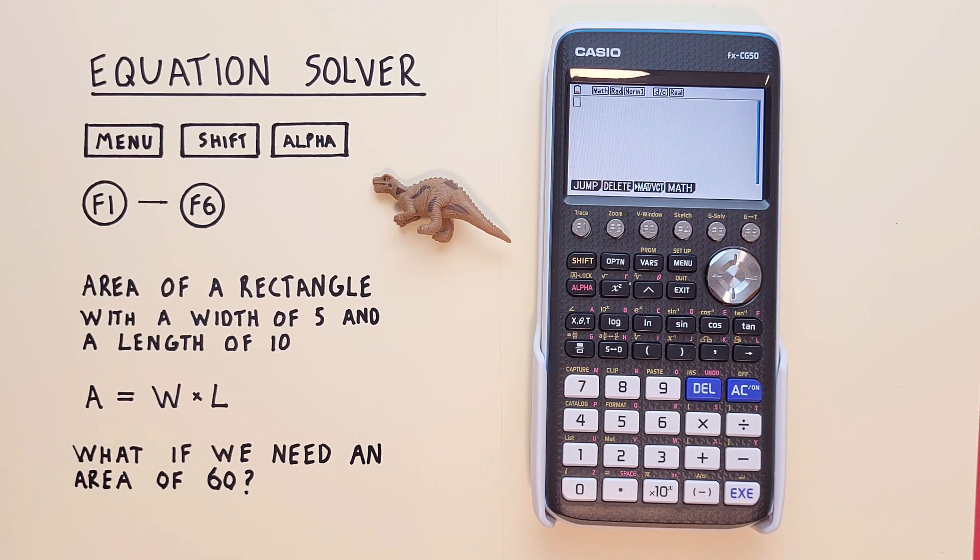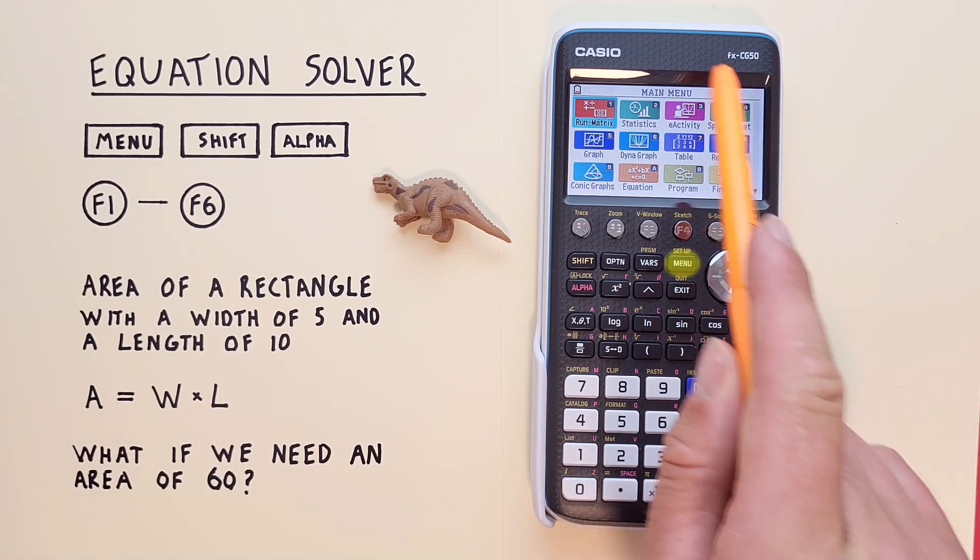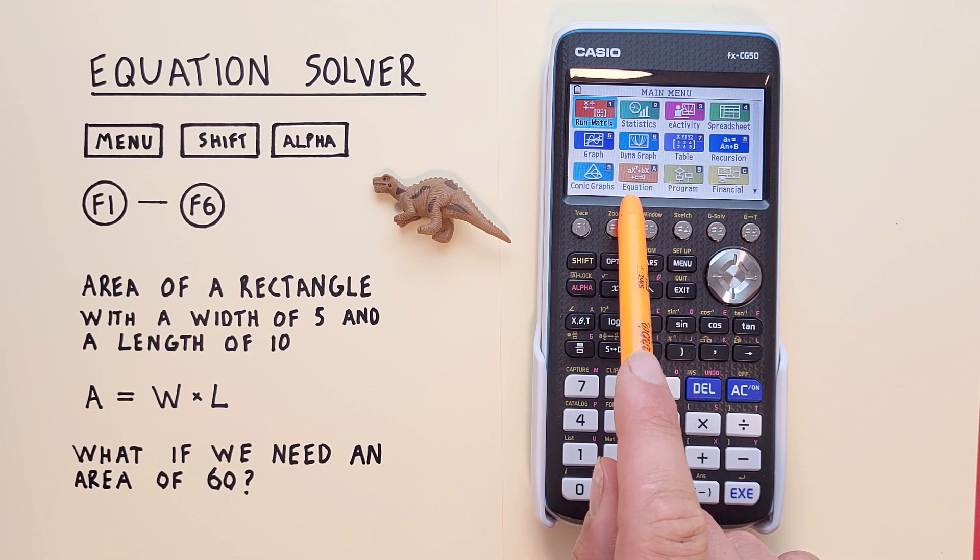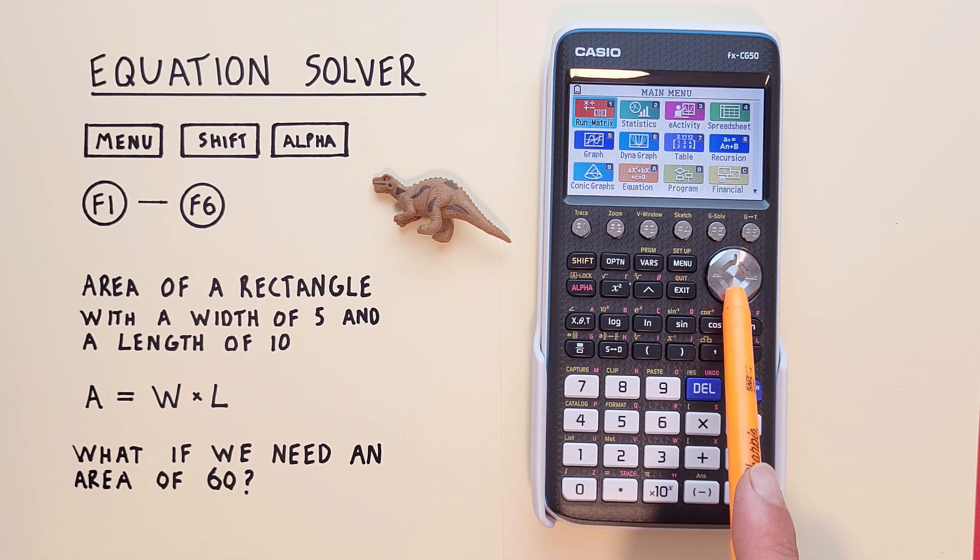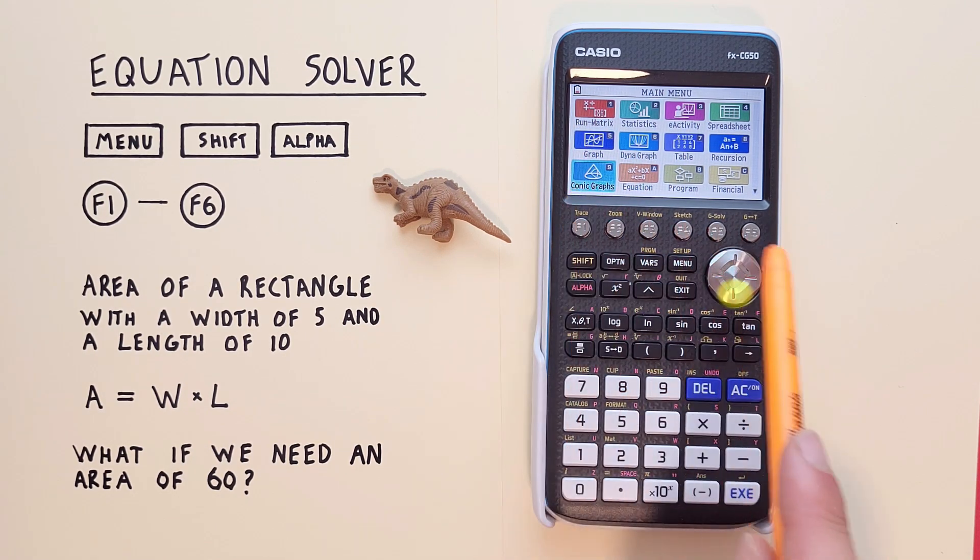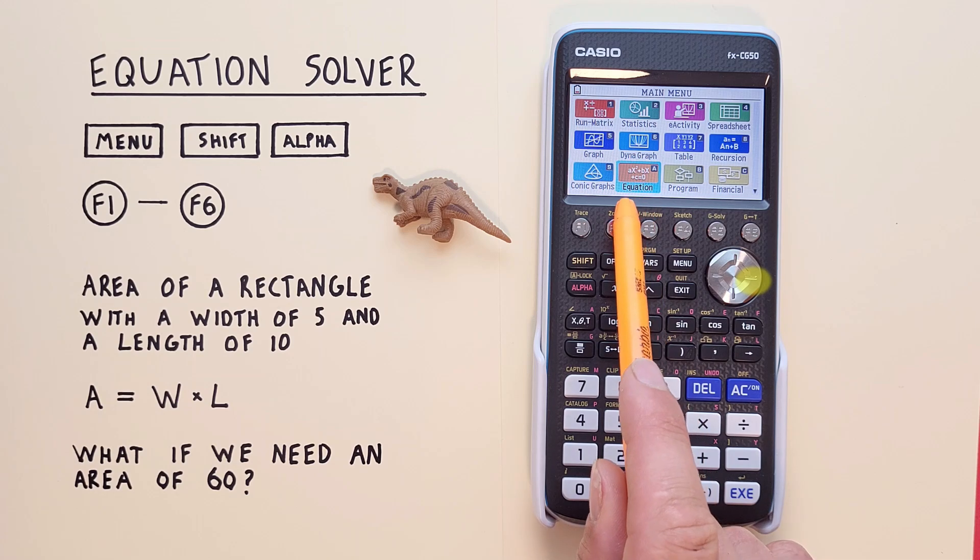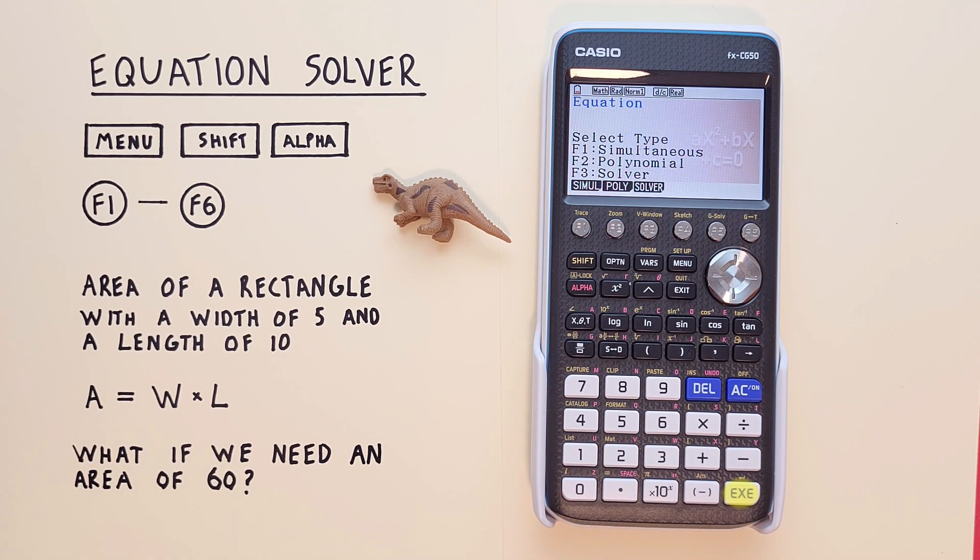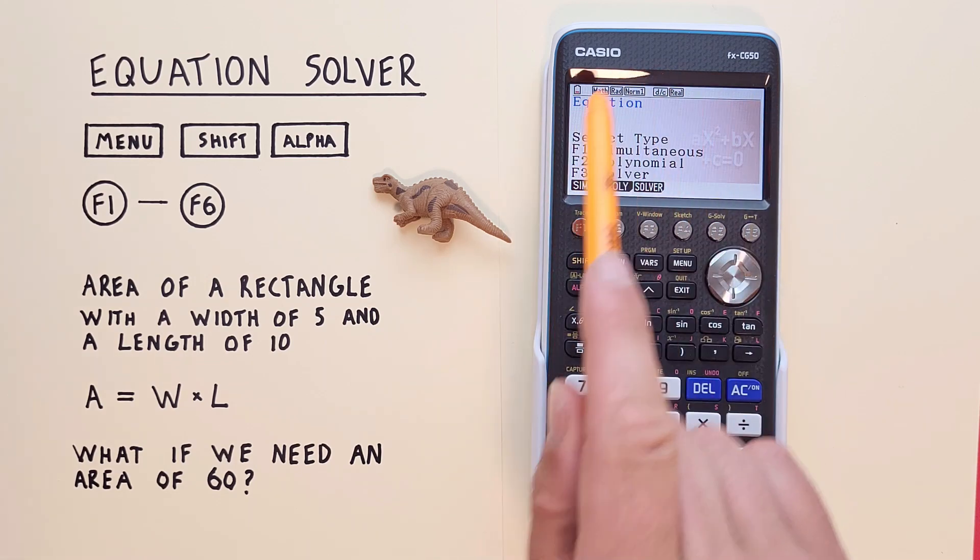To get started using the equation solver first we have to navigate to it. To find it we press the menu key to go to the main menu screen. And then we see down here equation. So if we scroll down two and to the right one, we'll highlight the equation app, select it with the EXE key, and see this screen here.